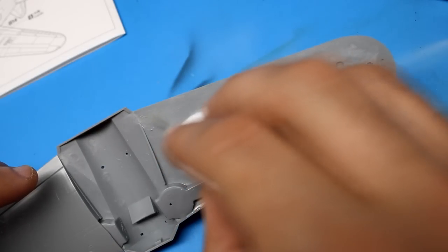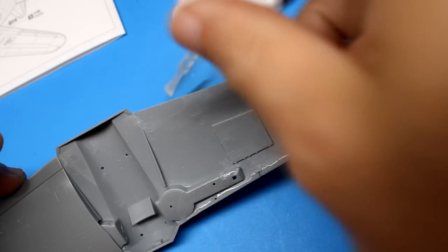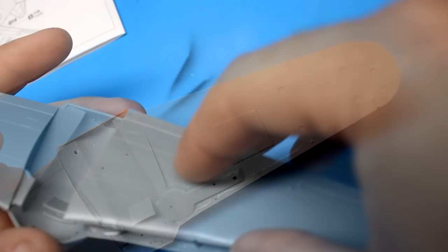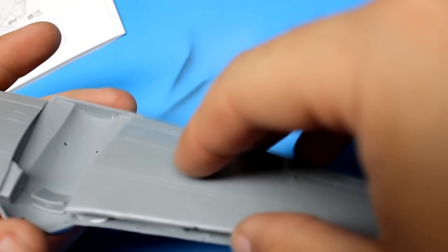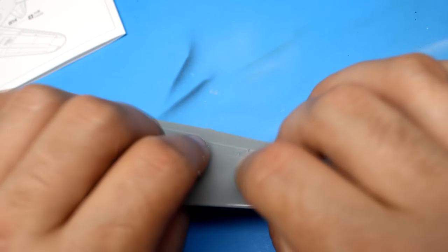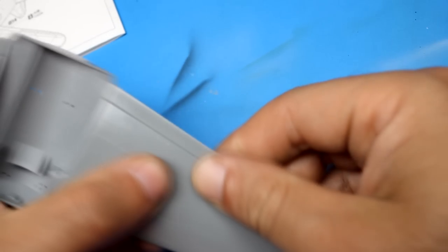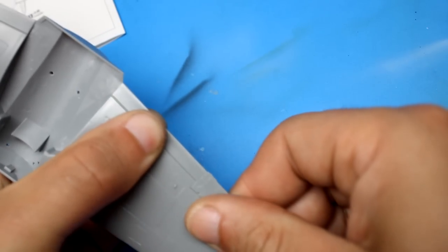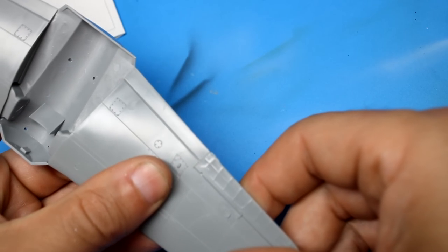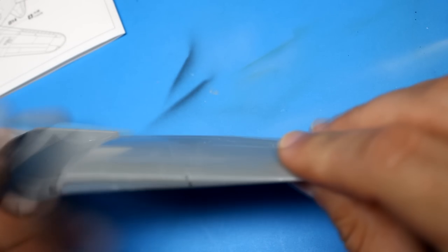Let's talk a little bit about seam cleanup on a model. If there's one thing I hate, it's when I've put a model together, it's in primer, I start putting down some paint, and then I notice there's a ghost seam. And a ghost seam is exactly what it sounds like. It's a seam that just barely shows up, or it might only show up from a certain angle. So, how do you avoid this?